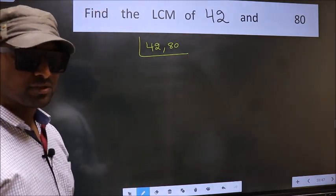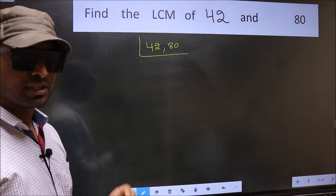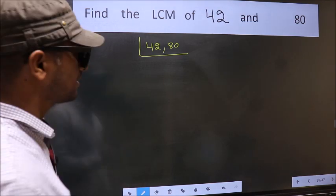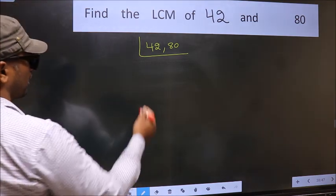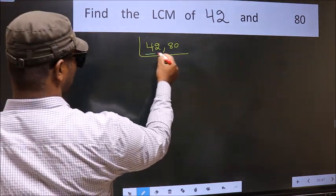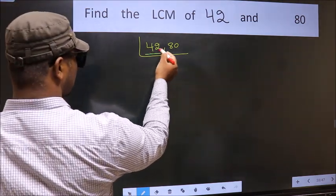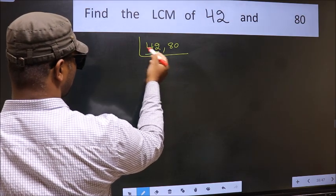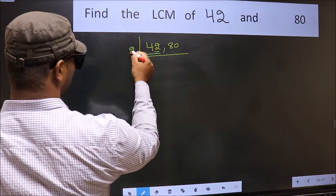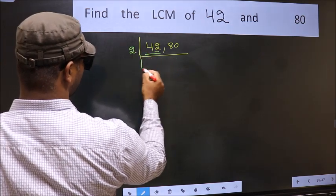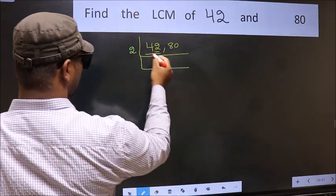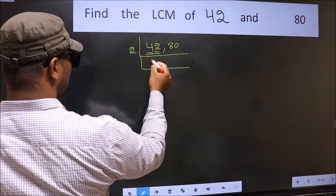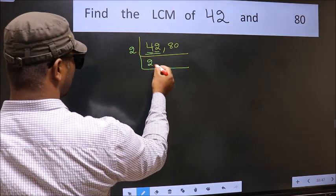Now you should focus on the first number, which is 42 here. For this number, last digit is 2. So take 2. First number 4 — when do we get 4 in the 2 table? 2 times 2 is 4.